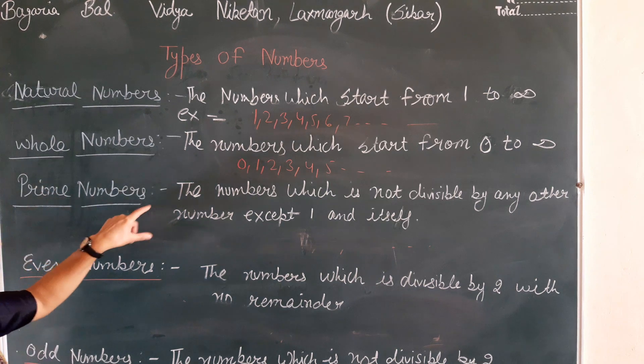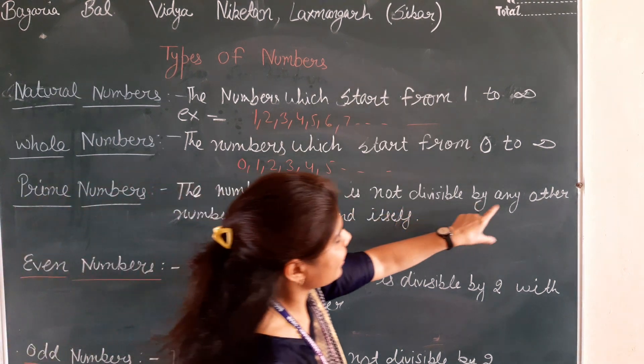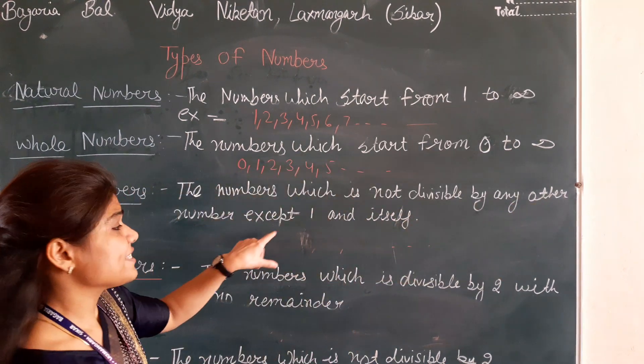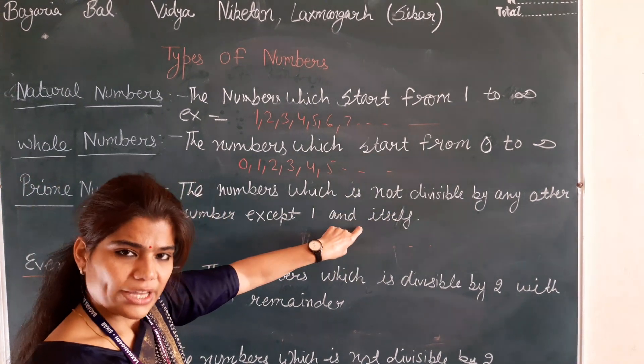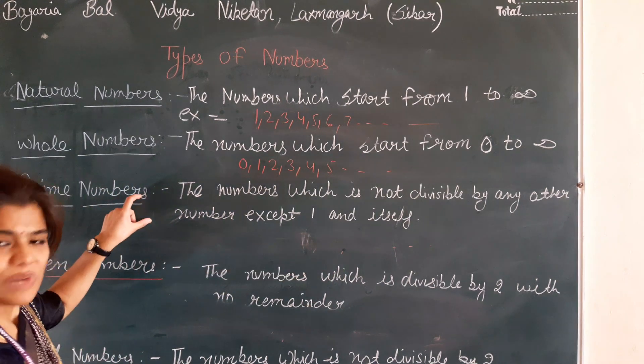Next, prime numbers. A number which is not divisible by any other number except 1 and itself. What are the numbers called as prime numbers?